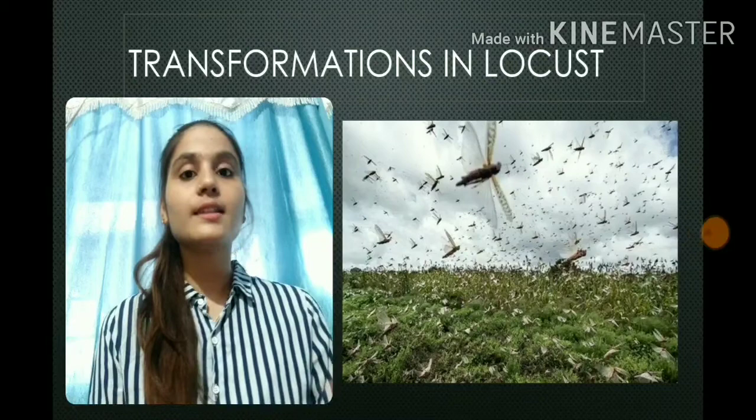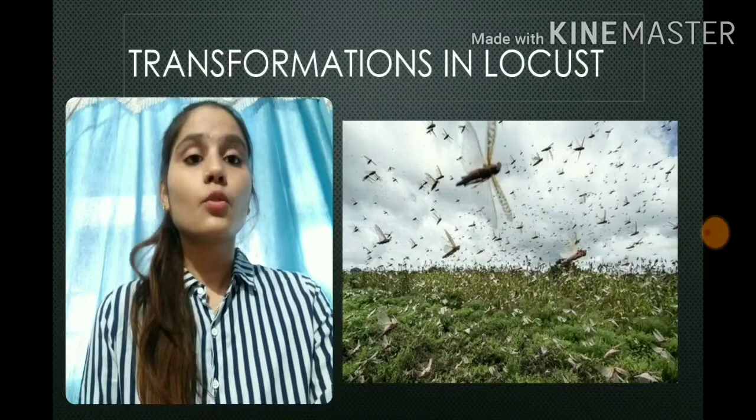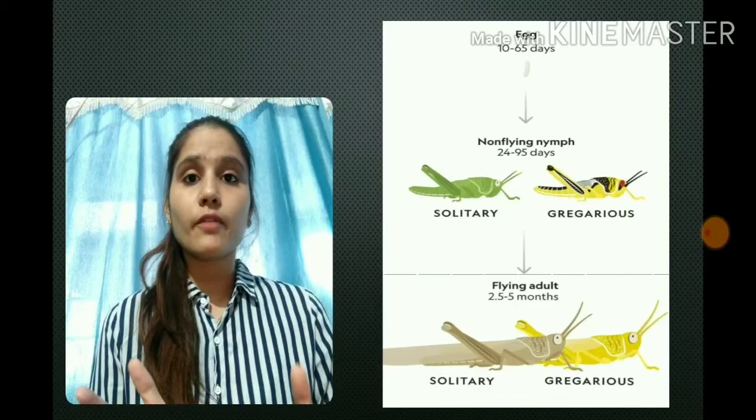When we talk about the life of a locust, they generally go through several phases before maturing into an adult. As you can see in the picture, on hatching a locust emerges as a wingless, non-flying nymph, which can go through any one of the following phases.